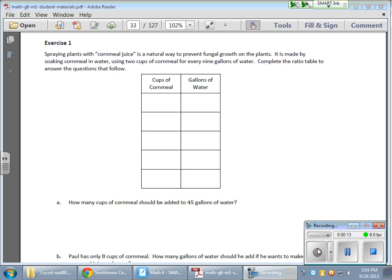So in this first exercise, we have someone who's spraying plants with cornmeal juice as a natural way of preventing fungal growth on plants. It's made by soaking cornmeal in water using a mixture of two cups of cornmeal for every nine gallons of water. Complete the ratio table to answer the questions below.